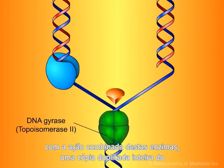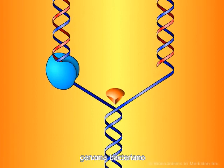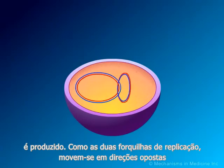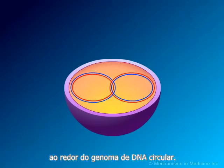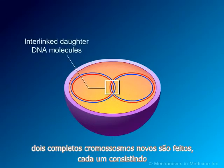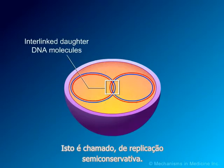With the combined involvement of these enzymes, an entire duplicate copy of the bacterial genome is produced as the two replication forks move in opposite directions around the circular DNA genome. Eventually, as the two replication forks meet, two new complete chromosomes have been made, each consisting of one old and one new strand of DNA. This is referred to as semi-conservative replication.